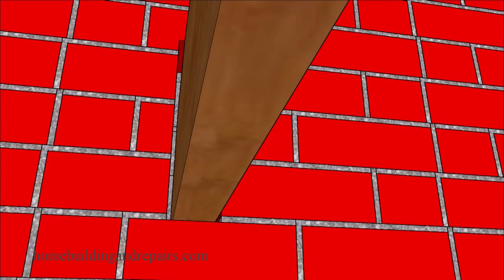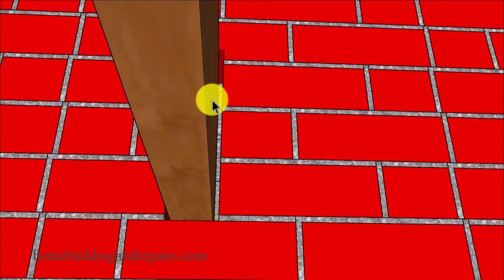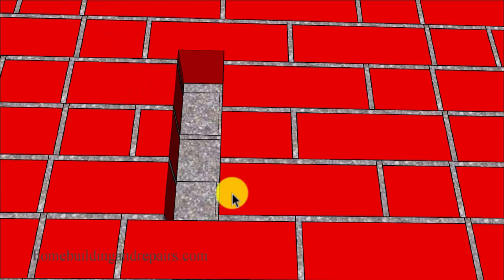This right here is probably not going to be an approved building method today, however it was years ago. What they're basically asking for with a fire cut situation will be to leave a gap on each side of the joist and if possible a gap on the top. So we're going to have a slotted groove in the wall.